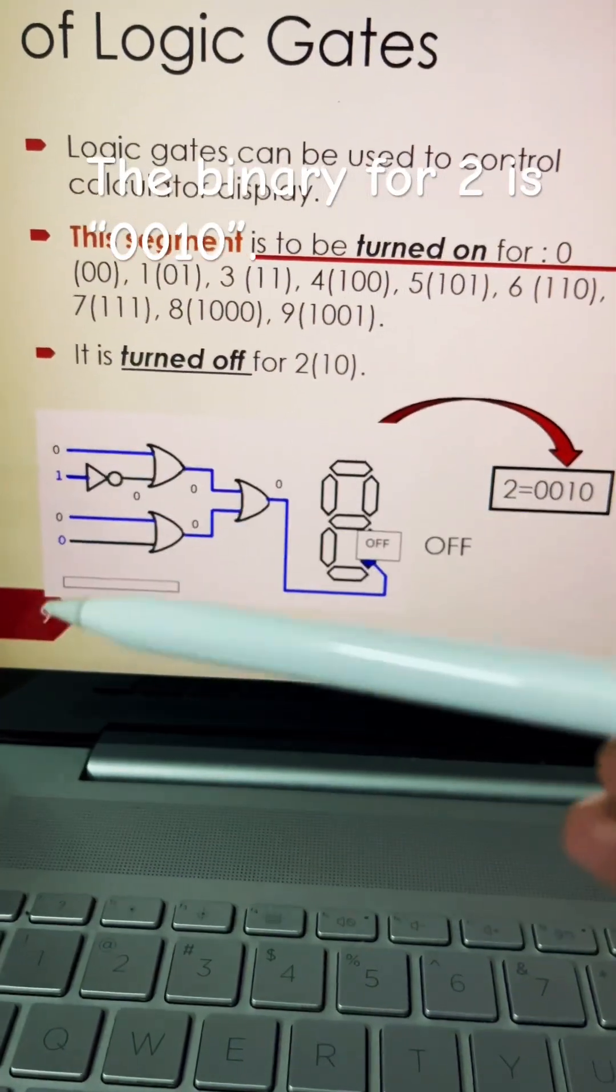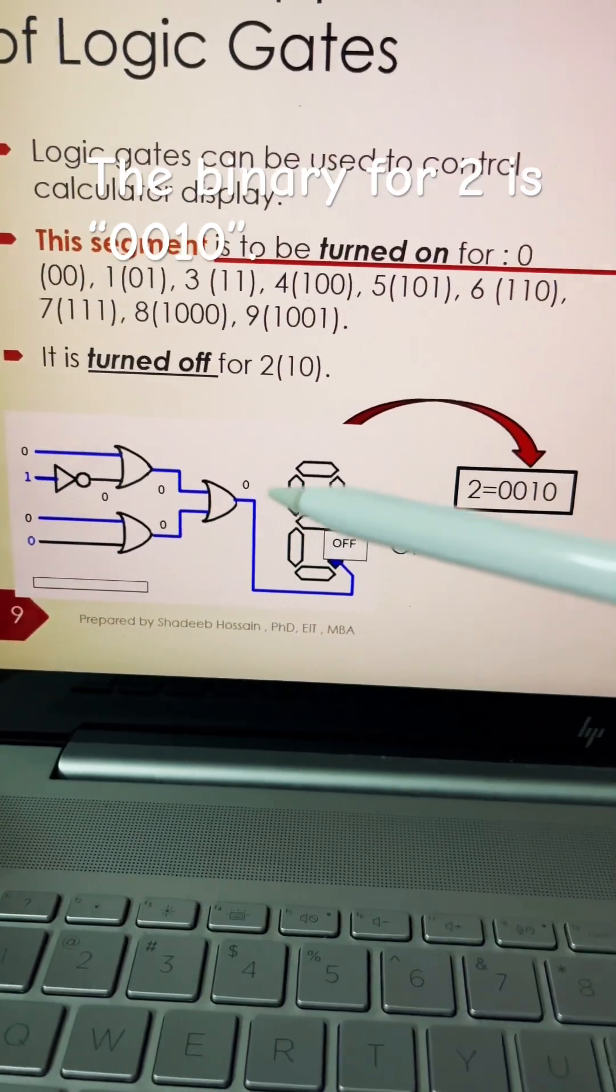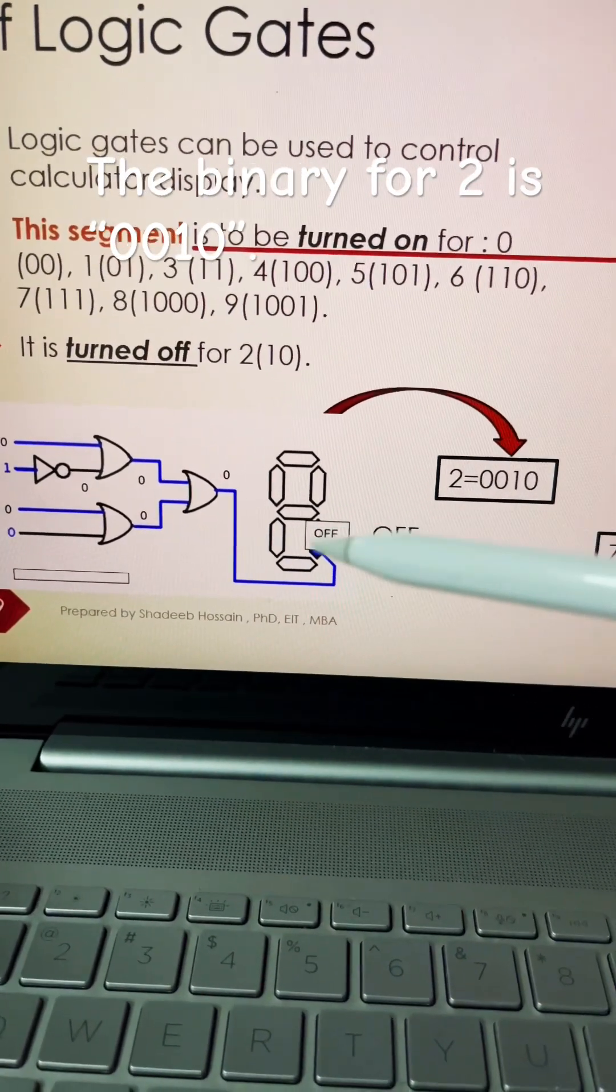However, for a 2, it's 0, 0, 1, 0. The output is 0. Hence, it's turned off.